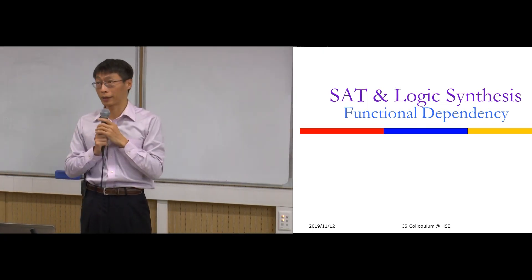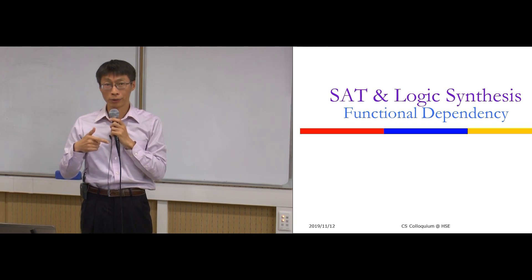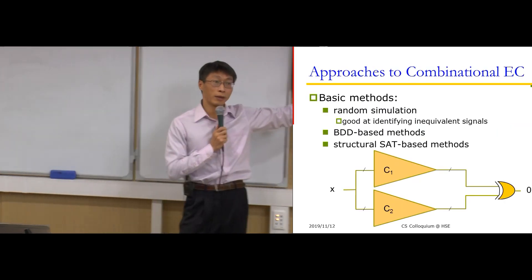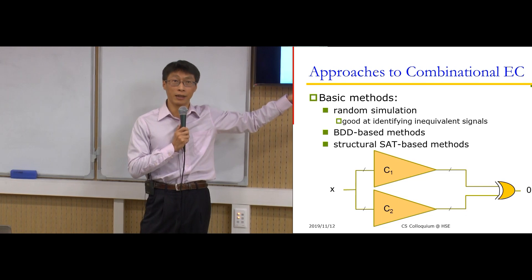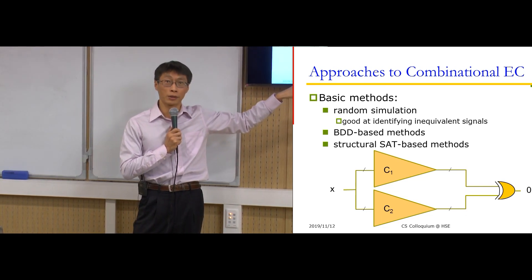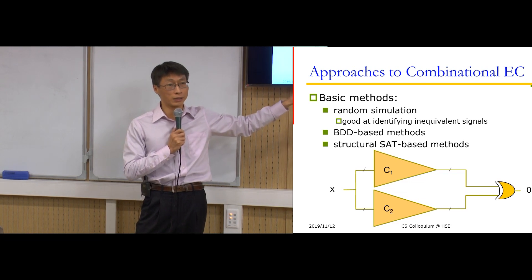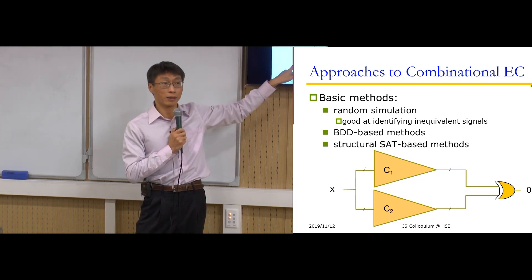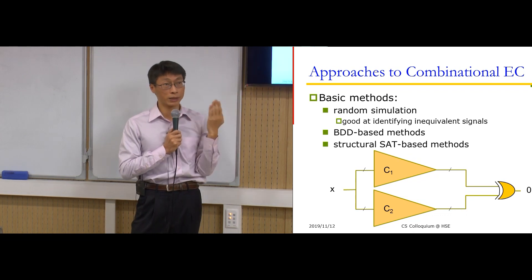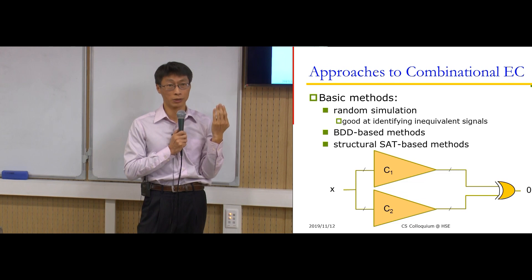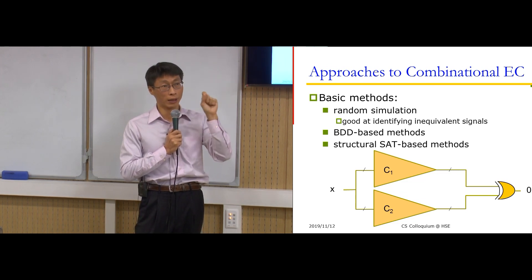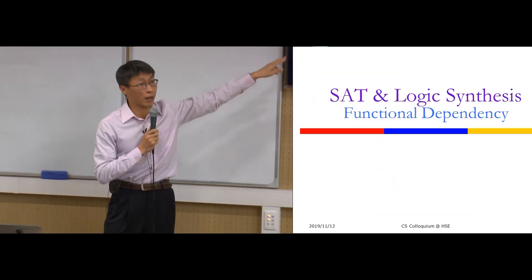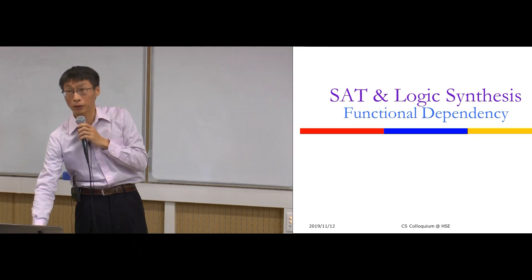That is the first simple example of using SAT solving for verification. Next, I will show another more complicated example using Craig interpolation as an application. In the equivalence checking example, we need the SAT certificate — the truth assignment — where unsatisfiability directly proves equivalence, and the satisfying assignment gives us the witness for bug identification.